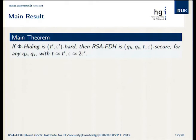Now we'll look at our main results. Our main theorem, very informally, states that if phi-hiding is (T', ε')-hard, then RSA full domain hash is (Q_H, Q_S, T, ε)-secure for any Q_H, Q_S, with T approximately equal to T' and ε approximately equal to 2ε'.